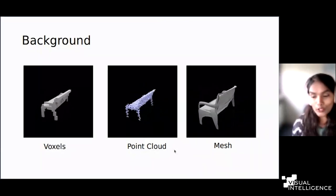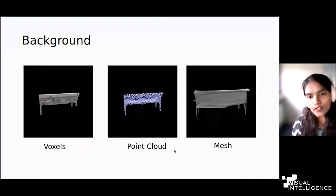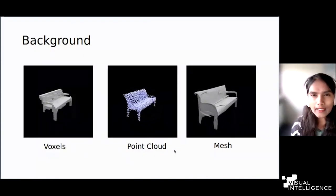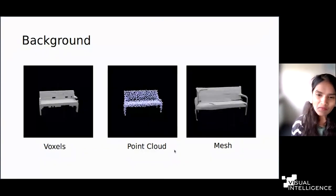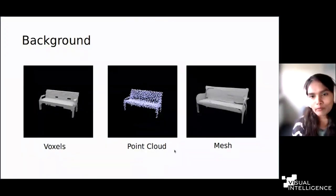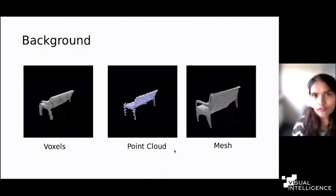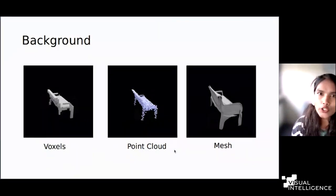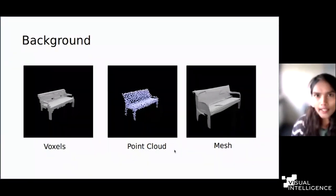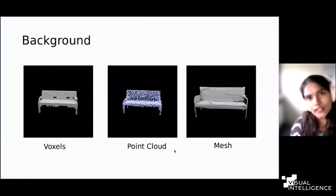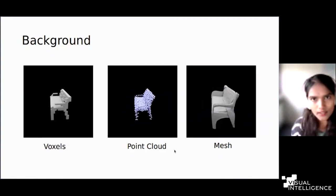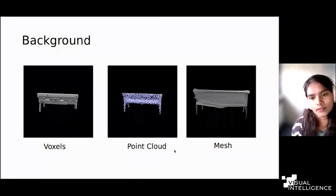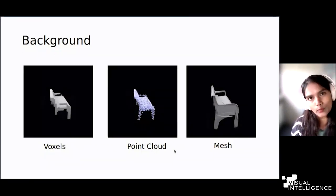Meshes are a very well-known traditional computer graphics representation and are more suitable for 3D shapes. However, their compatibility with deep neural networks is not so good. In mesh representations you have vertices and faces, so when you want to generate or represent content using deep neural networks, you need to learn additional connections between these vertices, which becomes more difficult. Meshes are also non-Euclidean data, making them further difficult to process using deep neural networks.